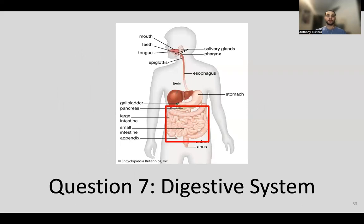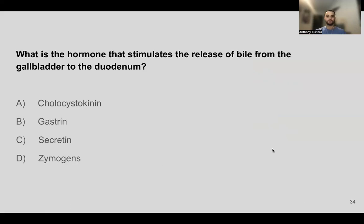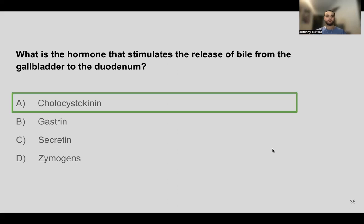Question seven: what is the hormone that stimulates the release of bile from the gallbladder to the duodenum? Gastrin can be crossed off because it acts in the stomach. Zymogens are just inactive forms of enzymes, so that is also wrong. Between secretin and CCK, CCK stimulates the release of bile, while secretin slows motility, controls pH, and releases pancreatic enzymes into the duodenum. The answer is A, CCK.